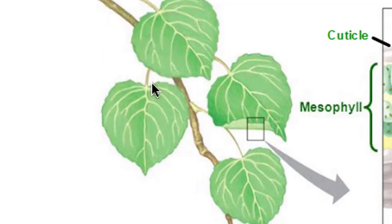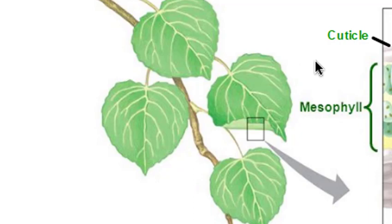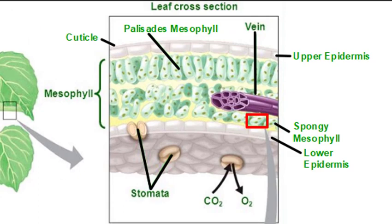When you pick up a leaf it's pretty thin and light and doesn't look like much other than having veins running through it. But if we slice a leaf in half and look at the inside, there's actually a lot going on. This is our leaf cross-section, and it has many distinct layers. Let's start taking a look at those layers and their functions.